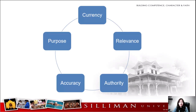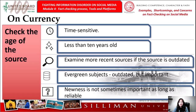CRAAP framework means currency, relevance, authority, accuracy, and purpose. Let's start with currency. Number one consideration is check the age of the source. This means we need to look for the most recent sources available if the information is time-sensitive.